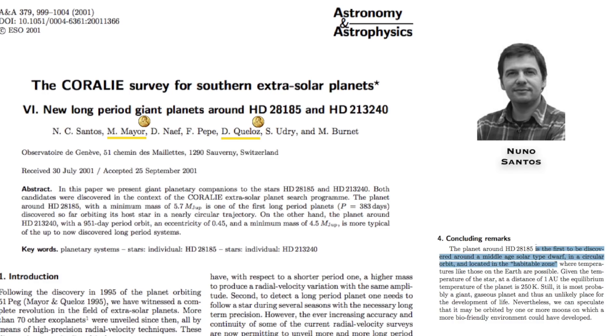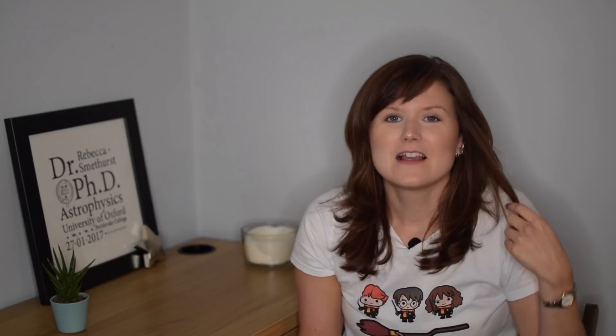Before we get to Heidi though, in 2001, Nuno Santos and collaborators found the very first planet in the habitable zone around a star. It's 5.7 times the mass of Jupiter, so it's not exactly Earth-like under any definition, but it is still in the habitable zone, which was a major advancement for the field of exoplanets.